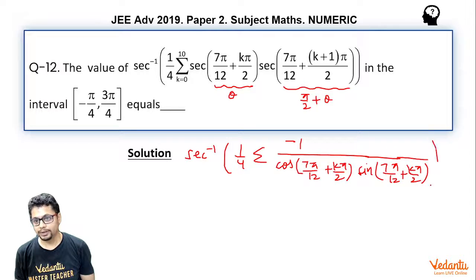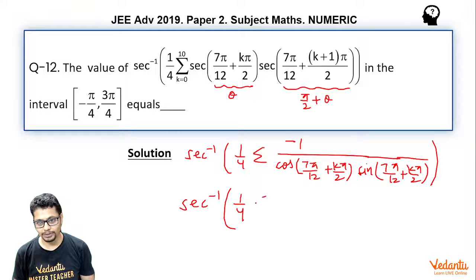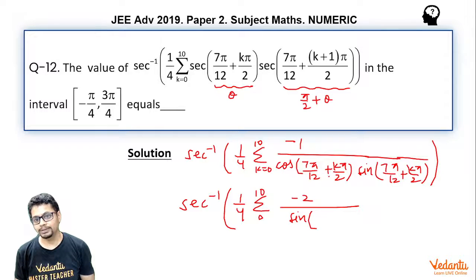If you see carefully, sine theta cos theta is essentially sine 2 theta by 2. So, this essentially becomes sec inverse 1 by 4 times sigma, of course, k varies from 0 to 10. Minus 2 times sine 2 times this theta or you may say k pi plus 7 pi by 6.